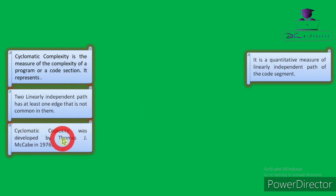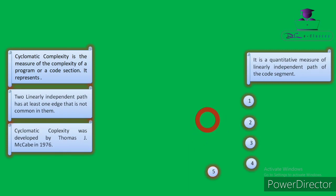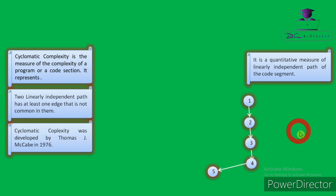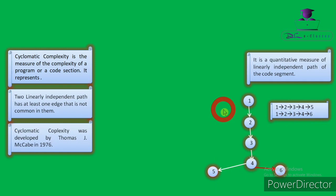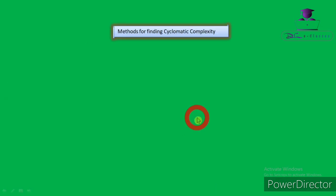Cyclomatic complexity was developed by Thomas J. McCabe in 1976, and is therefore also known as McCabe's cyclomatic complexity. It is a very important metric in software testing, and is also used in path testing, which will be discussed in upcoming lectures. For example, in a CFG with five nodes, there are two paths: 1-2-3-4-5 and 1-2-3-4-6. These two paths are linearly independent because both have at least one node not common to the other.